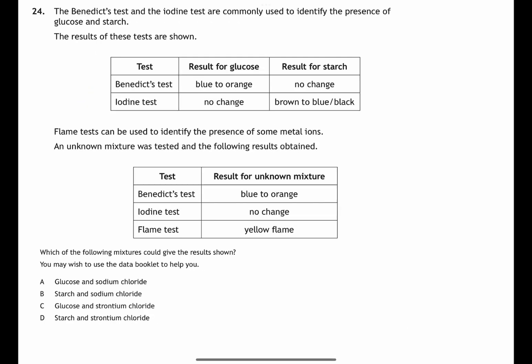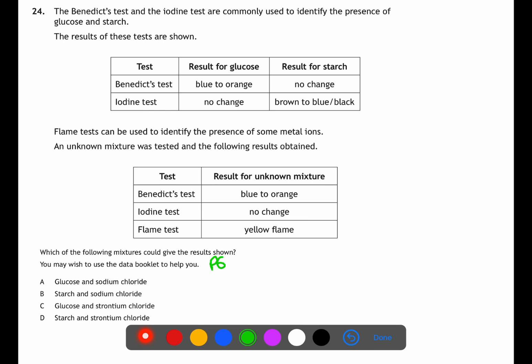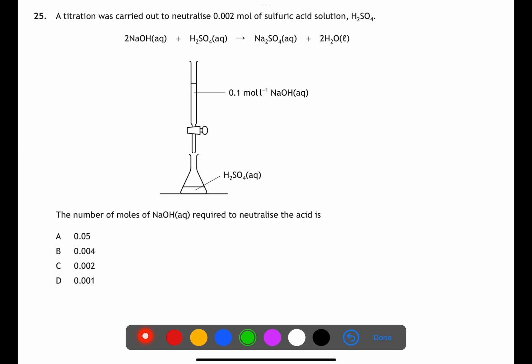Question twenty-four is a problem-solving question with various tests applied to a mixture. Page 6 of the data book helps with flame tests. The Benedict's test goes from blue to orange — glucose is present. The iodine test shows no change — no starch is present. A flame test showing yellow indicates sodium. Therefore the mixture must contain glucose and sodium chloride.